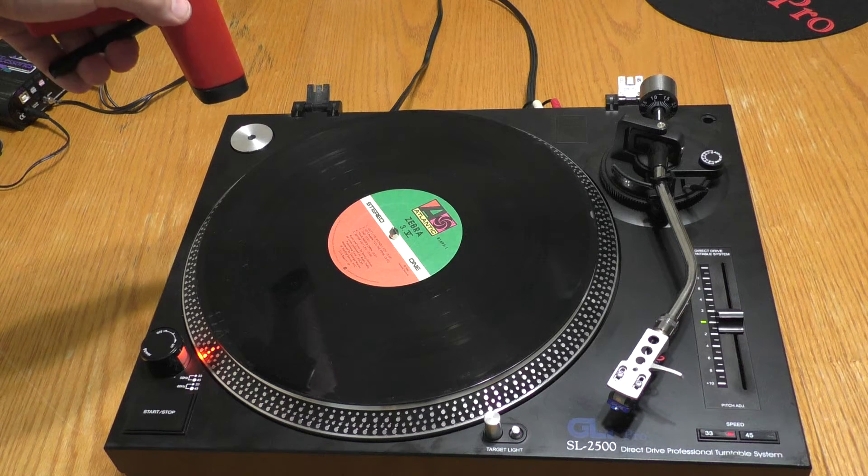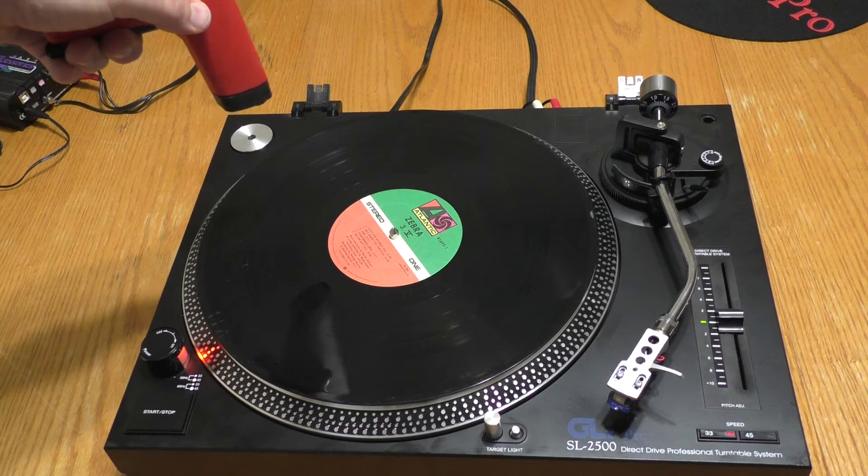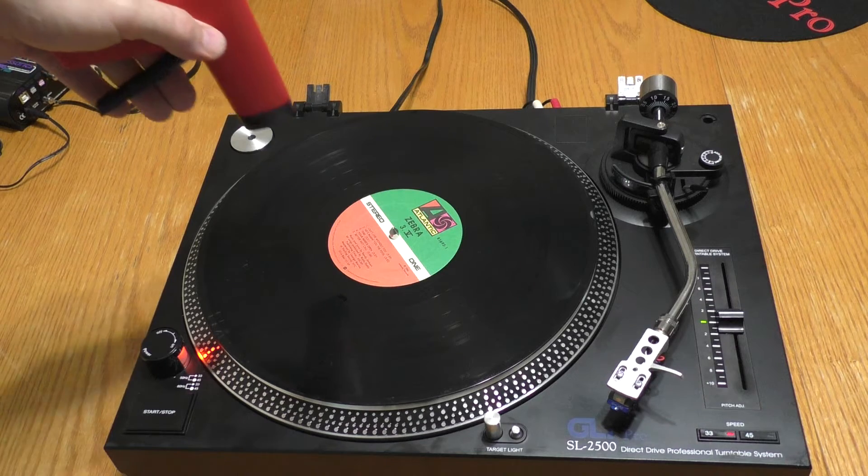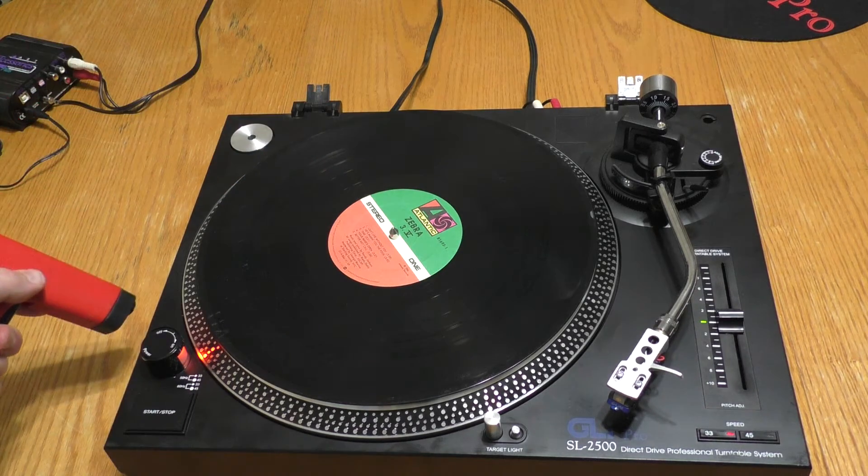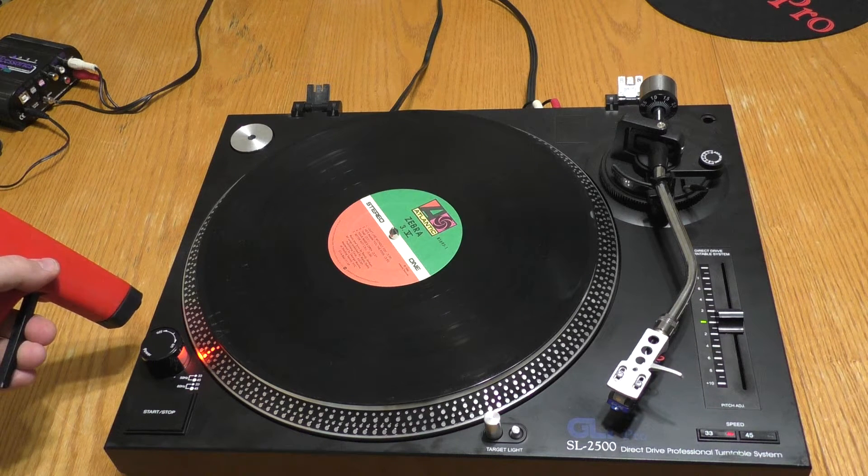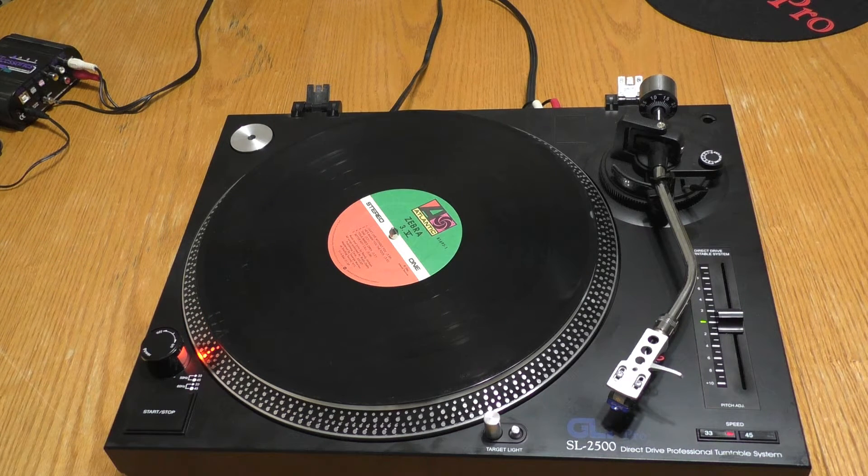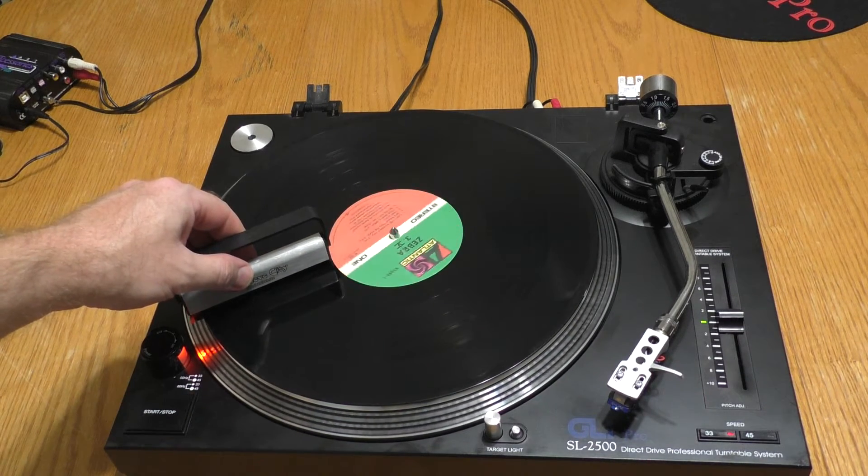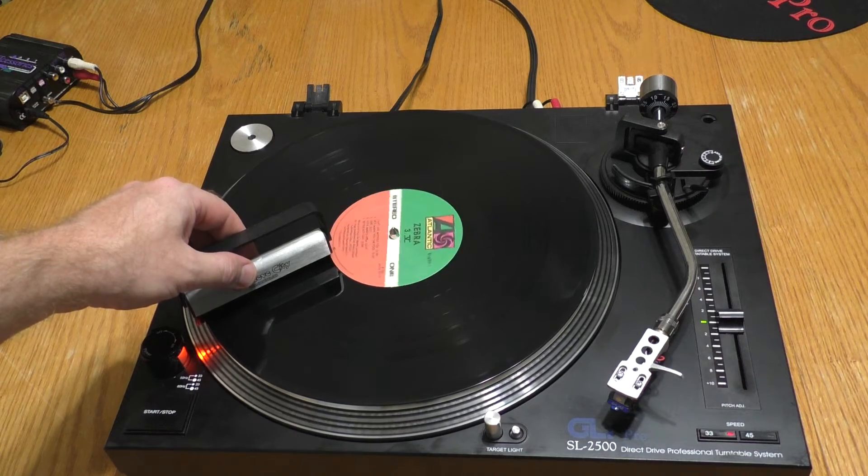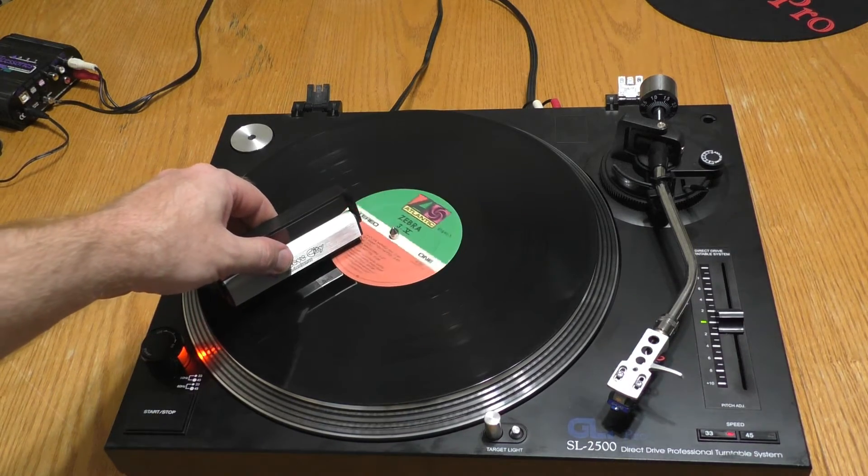I do this process three times over three regions of the record. For the final squeeze, I place a Zero-Stat Gun directly over the label and squeeze it in. I then position the gun next to the housing of the turntable for the final release. Passing over the record with the brush again, more dust particles were picked up than by using the brush alone.